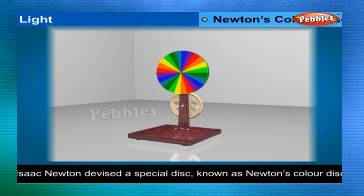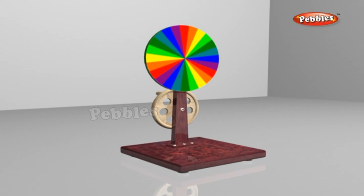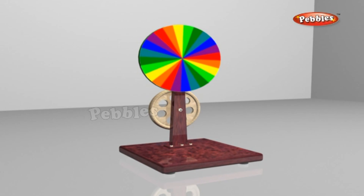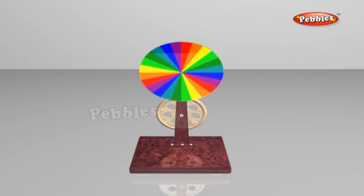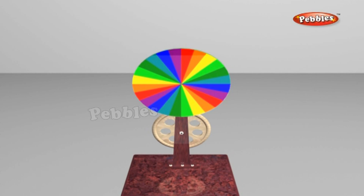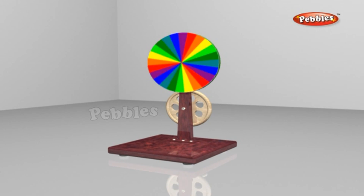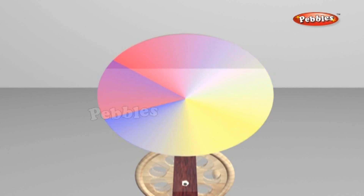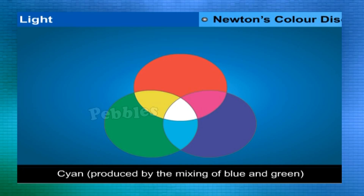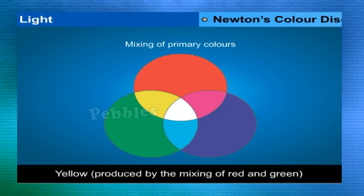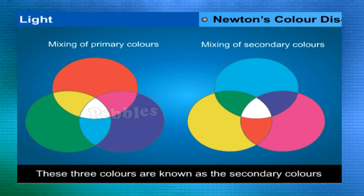Isaac Newton devised a special disc known as Newton's color disc, used to show how colors mix together. It is a demonstration apparatus that shows color mixing by rotating a disc of colored sectors. When the disc is still, individual colors are visible as separate sectors, but when rotated at high angular speed, the colors appear to mix and give the impression of white. The immediate combinations of primary colors are: cyan (blue + green), yellow (red + green), and magenta (red + blue) — these three are known as secondary or complementary colors.